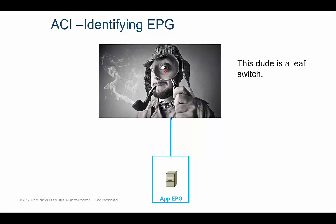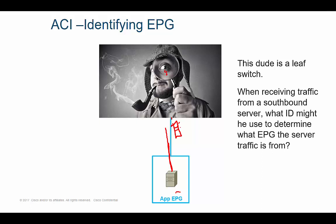Think of the leaf switch as a detective — he's inspecting a frame sent from a southbound server. The leaf switch is going to inspect the contents inside of the frame, looking at the different headers, addresses, and IDs. That inspection gives a clue as to which EPG this traffic should be placed in. So the question is: when inspecting a frame sent from a server, what IDs or addresses might the leaf switch use to identify which EPG the traffic is coming from?